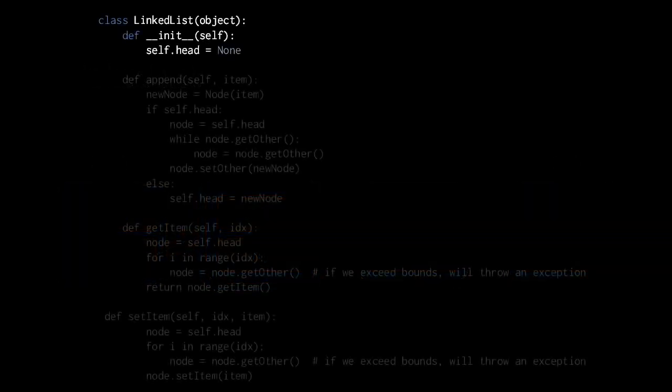So now, consider how we might implement a linked list as a Python class. We'll keep things simple and not include any operations for removing or inserting items in the middle of the list, but rather just include operations for retrieving values, changing the value of an existing node, and appending an additional item to the list — tacking on a new node.